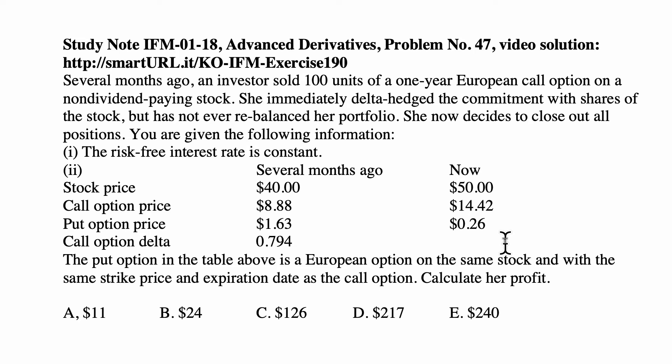We don't have call option delta right now, but we have now the stock price of $50, call option price $14.42, and put option price $0.26. The put option in the table above is a European option on the same stock with the same strike price and expiration date as the call option. Calculate her profit, the investor's profit.